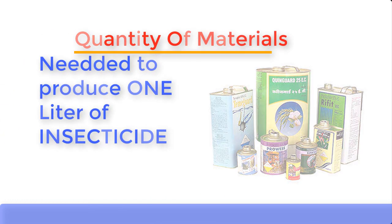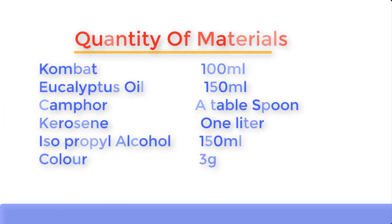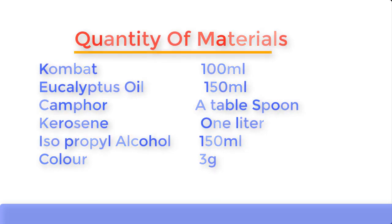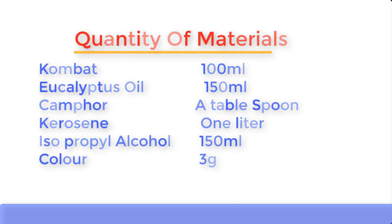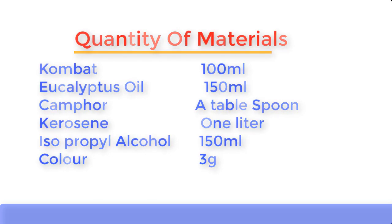Now let's establish the quantity of materials needed to produce one liter of insecticide: compact 100 ml, eucalyptus oil 150 ml, camphor one tablespoon, kerosene one liter, isopropyl alcohol also known as IPA 150 ml, and color three grams.